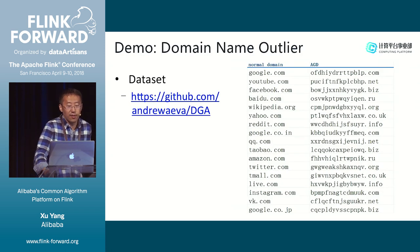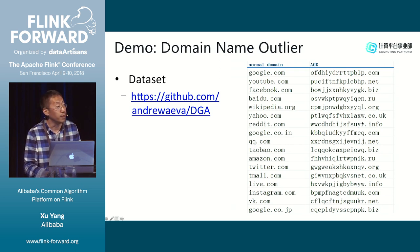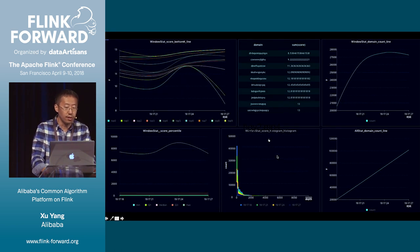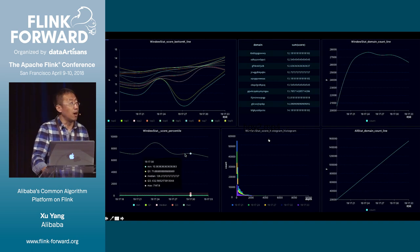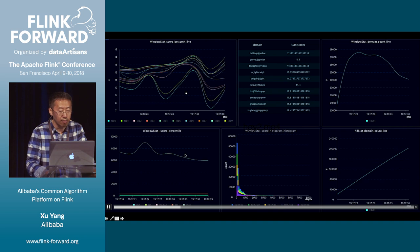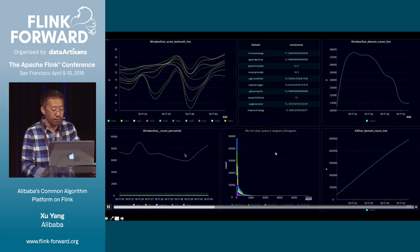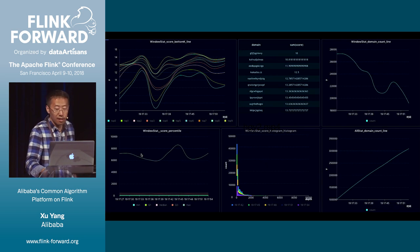The last demo is about outlier detection. The data has a left column of legitimate domain names and fraud domain names. We provide the AGD detection algorithm — this is the training process and this is the online prediction process. Note that a lower prediction value means a higher probability of being fraud. We show the bottom 10 prediction results and their distribution percentage.